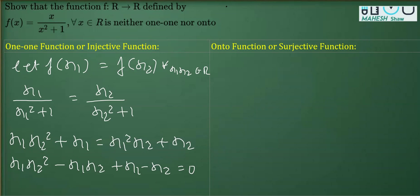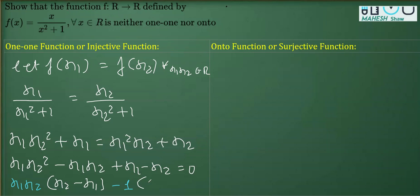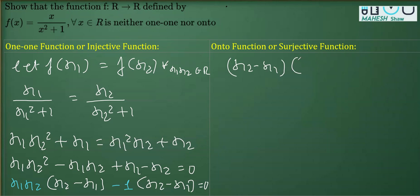We can see that x₁x₂ is common from the first two terms, so taking x₁x₂ as common gives x₁x₂(x₂ - x₁). From the last two terms, taking minus one common gives -(x₂ - x₁), so we get: (x₂ - x₁)(x₁x₂ - 1) = 0.